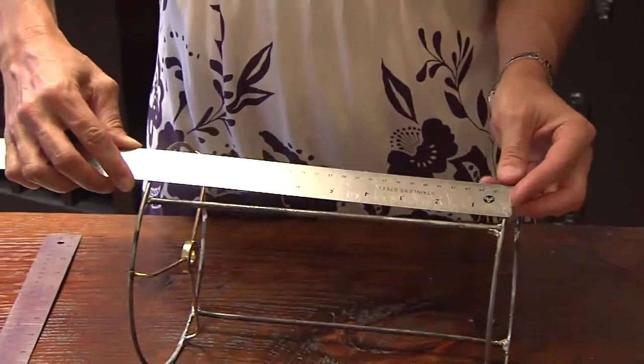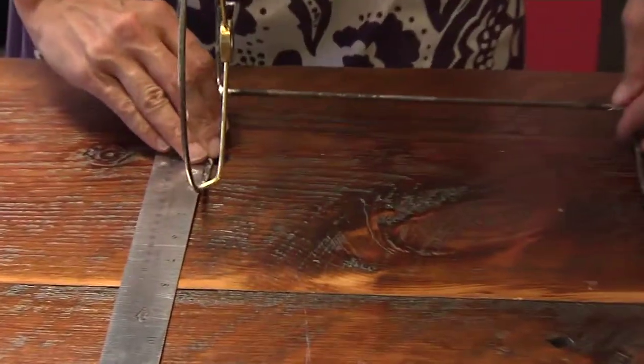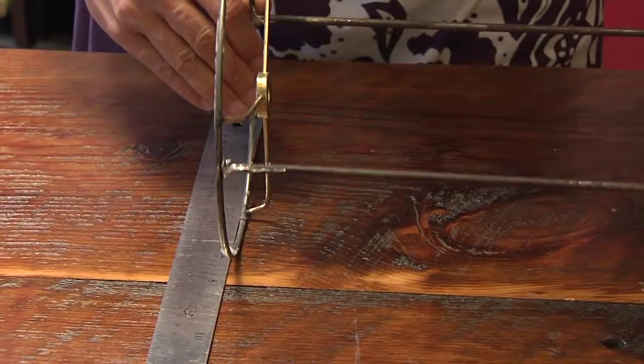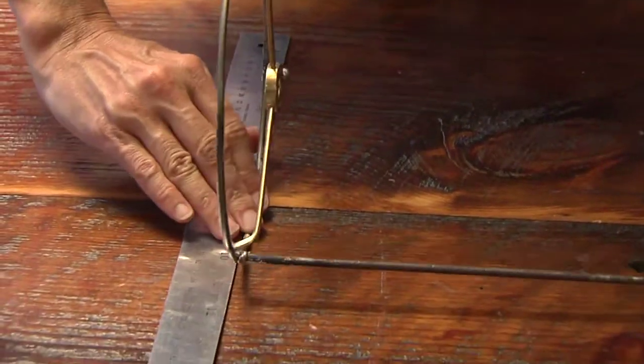First, measure the height of your lamp frame and add two inches. Next, measure the diameter of the frame by rolling it along one of your rulers. Then add three inches to that.